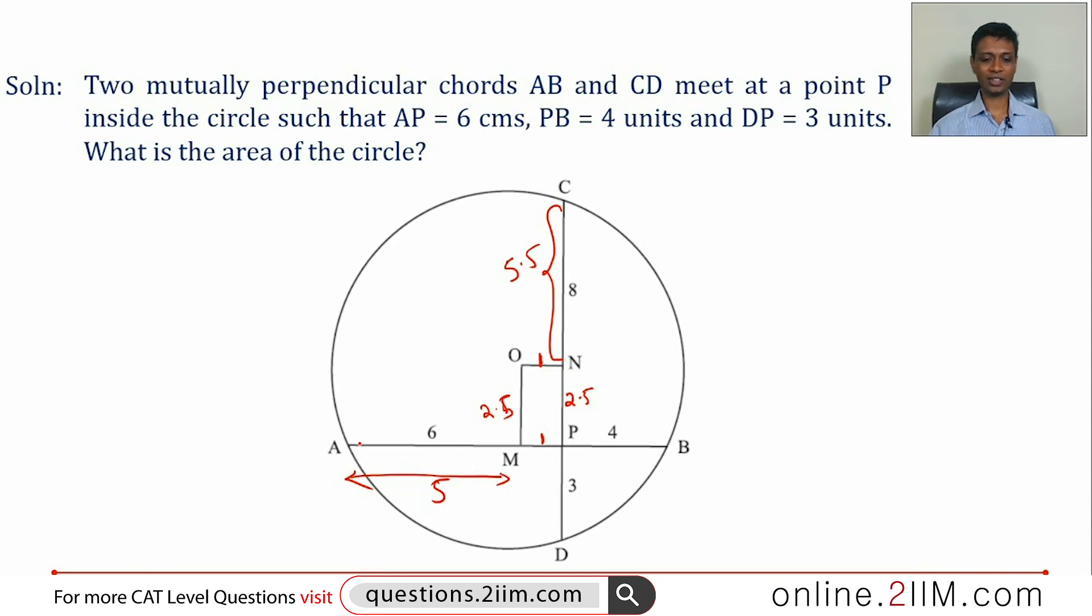We still need to find the radius. We can do it by two methods - either join AO or join OC. OC² equals ON² plus CN², equals 1² plus 5.5². Or we can say OA² equals OM² plus AM², which is 2.5² plus 5², equals 6.25 plus 25, which is 31.25. Or 1 plus 30.25, r² equals 31.25.